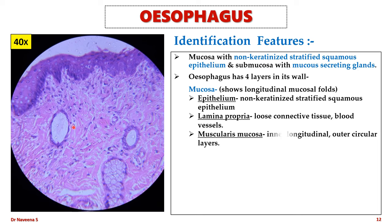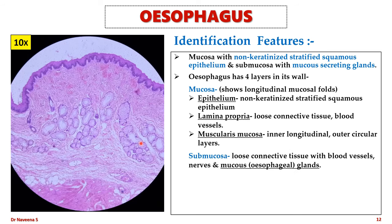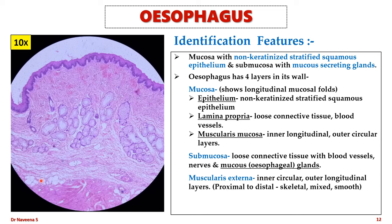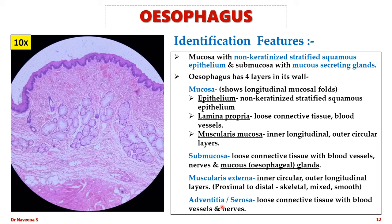Muscularis mucosa is formed by inner longitudinal and outer circular layers, which are not clearly distinguished in the upper part of the esophagus. The submucosa contains loose connective tissue with blood vessels and nerves, along with mucous-secreting glands also called esophageal glands. Muscularis externa is formed by inner circular and outer longitudinal muscle layers — skeletal muscles in the upper part, smooth muscles in the lower part, and both in the middle. The outermost layer is adventitia or serosa, formed by loose connective tissue with blood vessels and nerves.